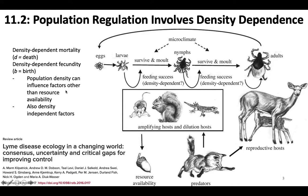Population density can influence things other than resource availability, but there are also density-independent factors that can work to regulate population size. Here is a graph from a paper I pulled. Since I know at least Taylor is interested in Lyme disease, and my student Rachel Keller is screening ticks on campus for Lyme disease — a lot of people have gotten Lyme disease at St. Vincent — I thought I'd include this figure looking at Lyme disease ecology and where some of the missing gaps of knowledge are that would help us control its prevalence in tick populations.